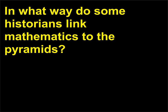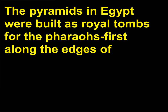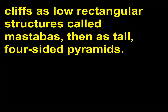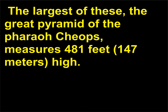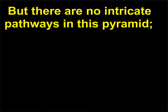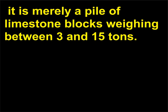In what way do some historians link mathematics to the pyramids? The pyramids in Egypt were built as royal tombs for the pharaohs — first along the edges of cliffs as low rectangular structures called mastabas, then as tall, four-sided pyramids. The three structures most of us associate with pyramids were built at Giza, near Cairo, about 2,500 BCE. The largest, the Great Pyramid of the Pharaoh Cheops, measures 481 feet (147 meters) high. But there are no intricate pathways in this pyramid; it is merely a pile of limestone blocks weighing between 3 and 15 tons.